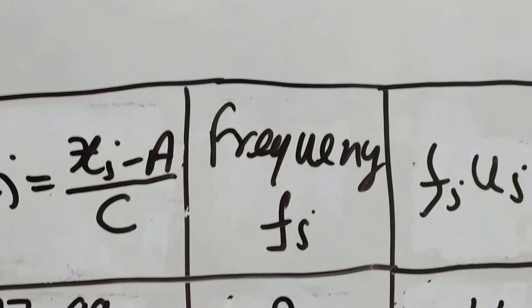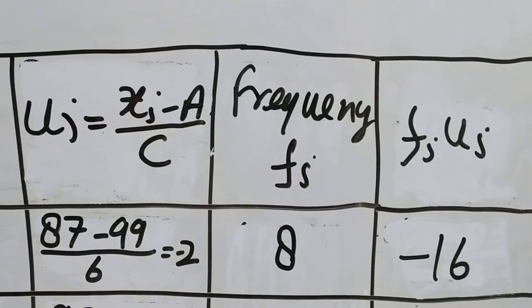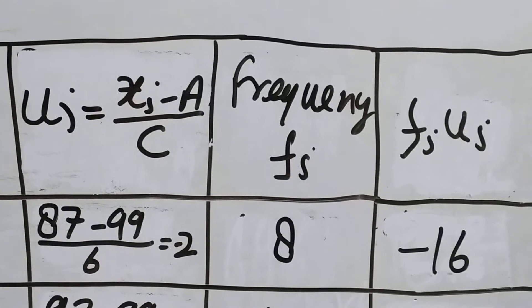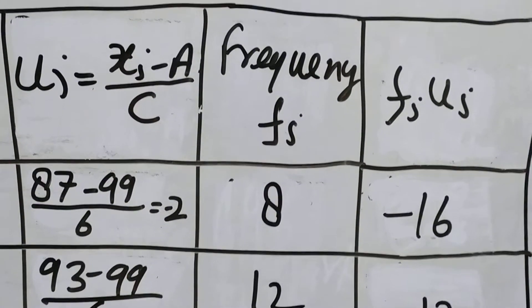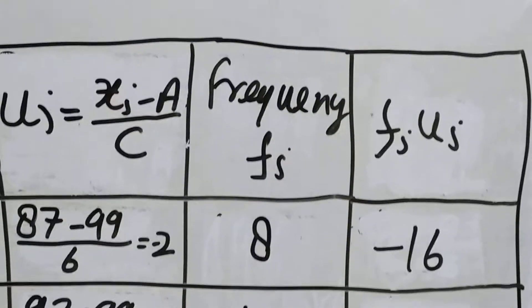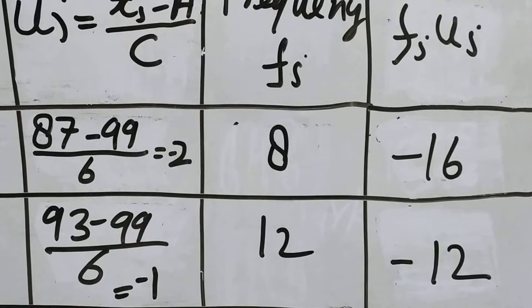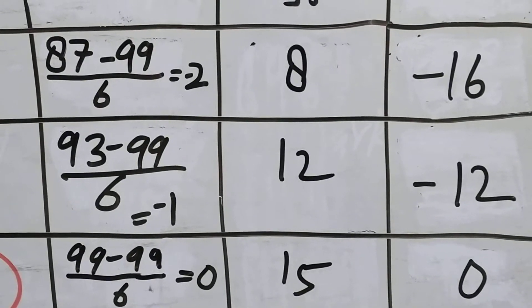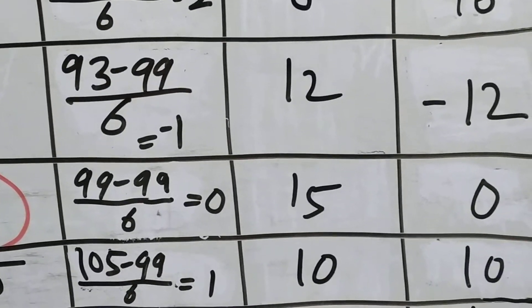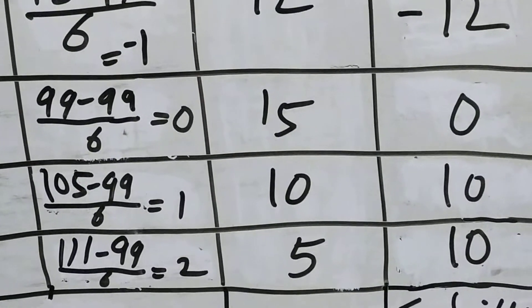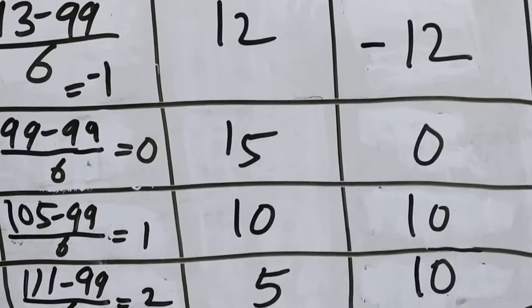Then you have to calculate fi ui. Fi ui means you have to multiply this ui value and fi value. Minus 2 into 8 is minus 16. Minus 1 into 12 is minus 12. 0 into 15 is 0. 1 into 10, of course it is 10. Similarly, 2 into 5 is 10.